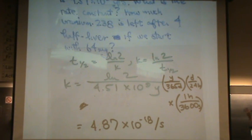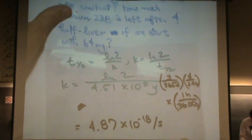So according to how the problem is worded, you wouldn't have to change it to per seconds, but just for fun, I did it. Okay. And then, to do the second part of the question, how much uranium is left after four half-lives?